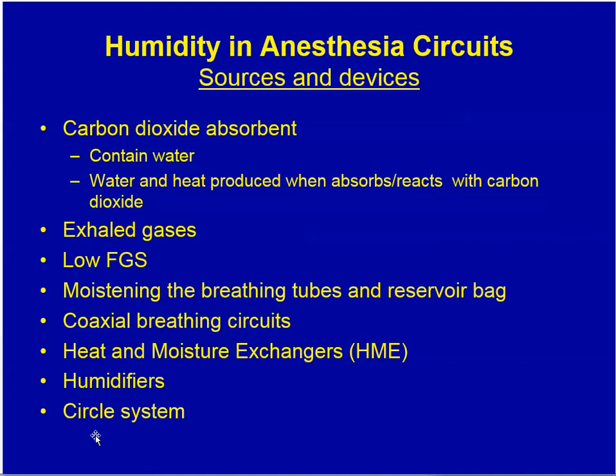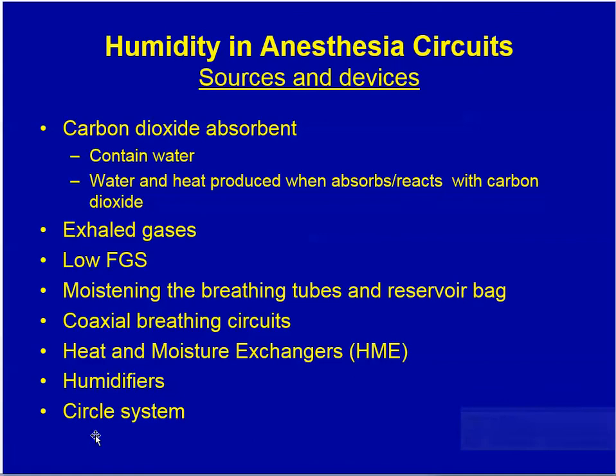How do we get humidity into anesthesia circuits? One source is the carbon dioxide absorbent, which contains water, and water and heat are produced as it reacts with carbon dioxide. Exhaled gases, of course, contain warm humidified gases. Humidity is favored by low fresh gas flow, by moisturizing the breathing tubes and reservoir bag, by use of coaxial tubing, heat and moisture exchangers, humidifiers, and the circle system.